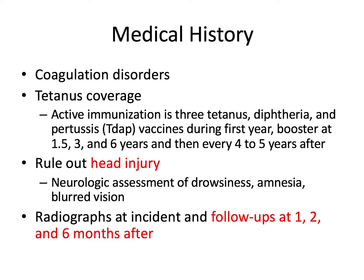Importantly, we need to rule out a head injury. If they've had trauma, there's a good chance they hit their head. We perform neurologic assessment of drowsiness, amnesia, and blurred vision — asking how many fingers am I holding up, checking speech, looking for ptosis or drooping eyelids, asking about dizziness, nausea, vomiting, or amnesia. If any of these signs are present, tell them their teeth are minor and send them to the ER for a head injury workup. Regardless of injury severity, we'd like follow-ups ideally at one, two, and six months after the incident.